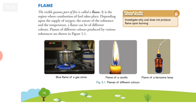Flame: the visible gaseous part of a fire is called flame. It is the region where combustion of fuel takes place. You can see the blue flame of a gas stove, the flame of a candle, and the flame of a kerosene lamp. Flames of different colors are produced by different substances depending upon the type of combustion, the availability of oxygen, the nature of the substance, and the temperature.